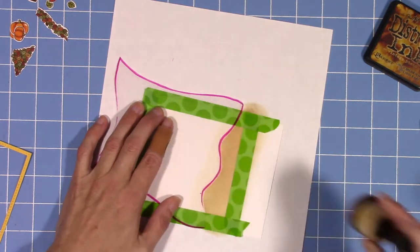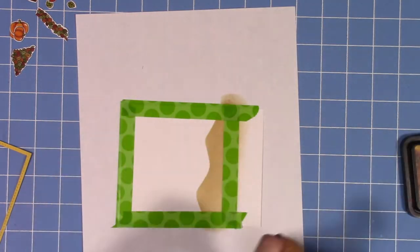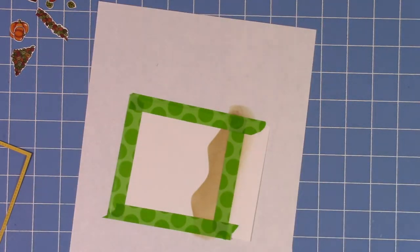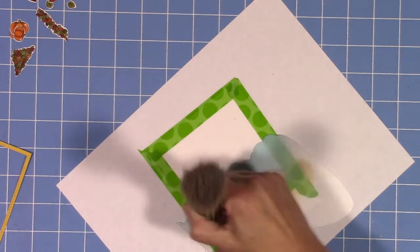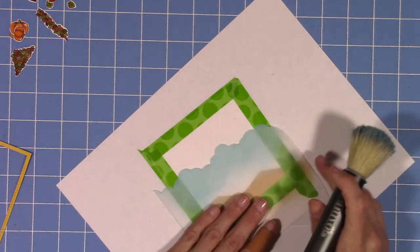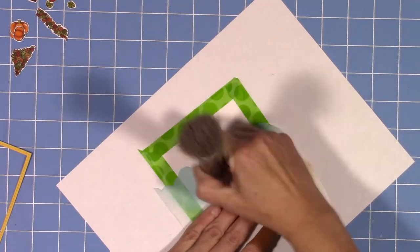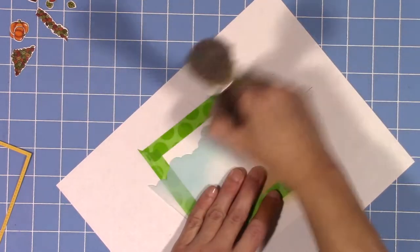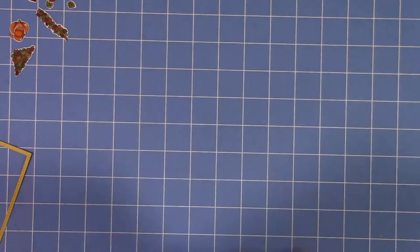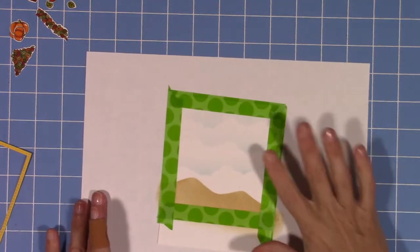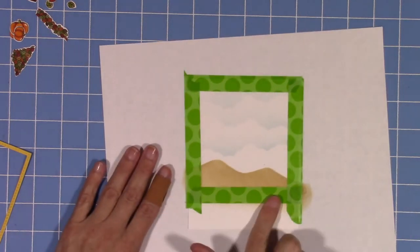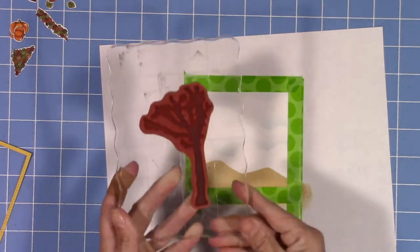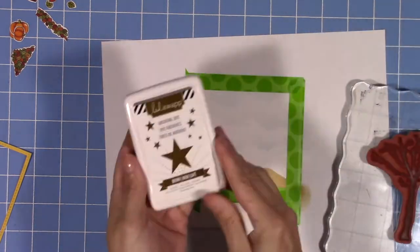I'm just going to use my vintage photo ink and my homemade stencils. I have a bunch of homemade stencils because I have to pick and choose what I buy, so I make my own. I'm using my clouds and ground stencils with vintage photo for the ground and tumbled glass oxide ink for the sky.